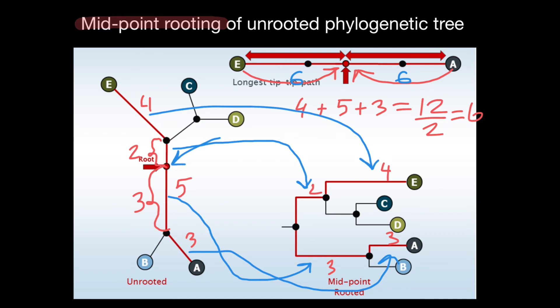For example, if we even miscalculated our midpoint — if the real midpoint should be here or here — we are still going to get the correct balance between all the taxa shown here and the correct relationships.